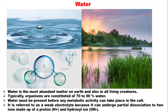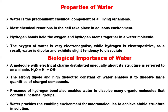Water dissociates into two ions: a hydrogen ion, which is called a proton, and a hydroxyl ion, which is OH negative. So let's look at the properties of water. Water is the most predominant chemical component of all living organisms.